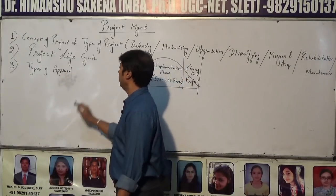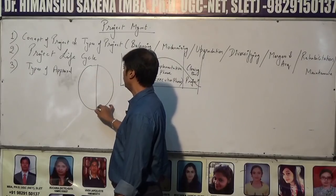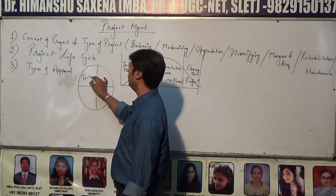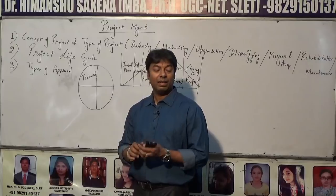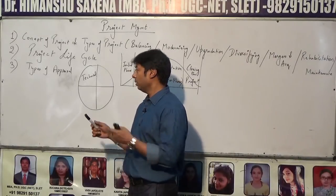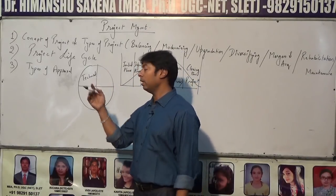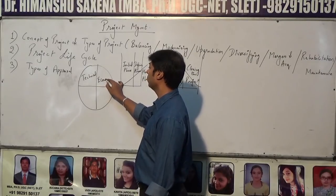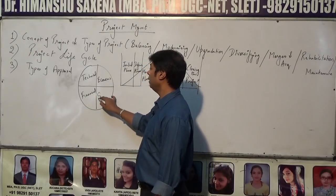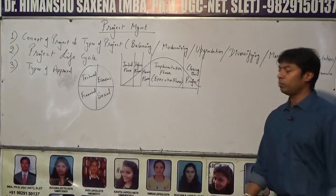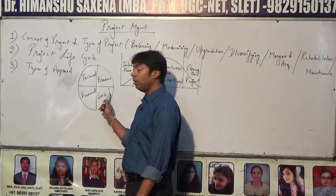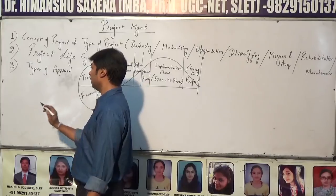Types of appraisal are done in four forms: technical appraisal, where all technology-related aspects are taken care of and the project is appraised from a technical point of view; then economic appraisal; financial appraisal; and social appraisal. So appraisal is bifurcated into these four categories: technical, economic, financial, and social.